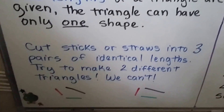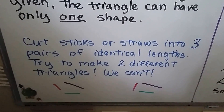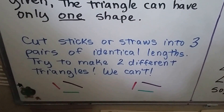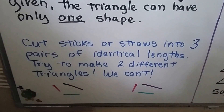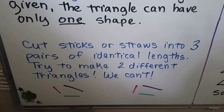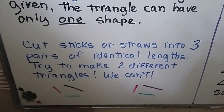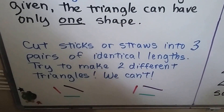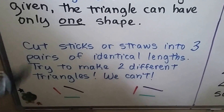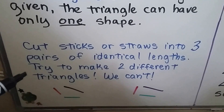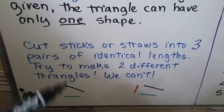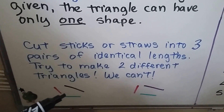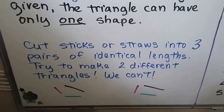So we can try doing this. Take some sticks, straws, popsicle sticks, or whatever and cut three pairs of identical lengths. That means you're going to have a pair that are maybe two inches long, a pair that are maybe three inches long, and maybe a pair that are four inches long, whatever measure you decide.